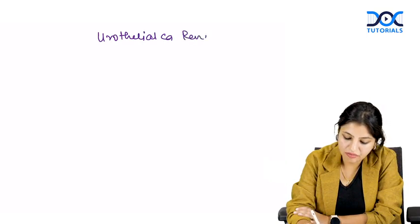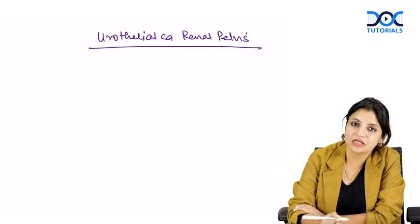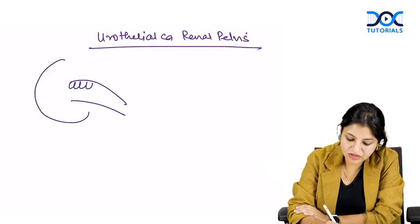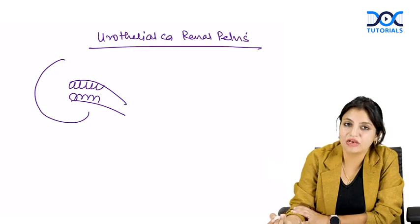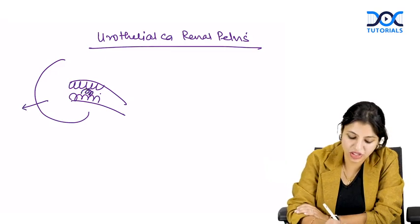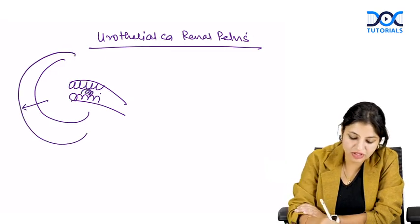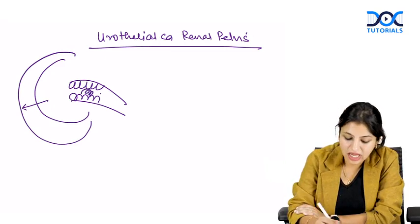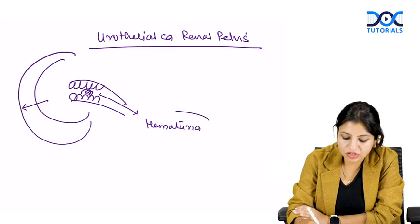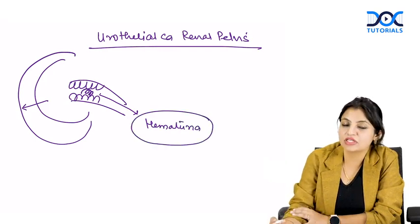Urothelial cancer of the renal pelvis arises in the pelvis, and as soon as it arises it can obstruct the pelvis. The patient can therefore present with hydronephrosis. Because these tumors are obstructing the pelvis, they can also present early with hematuria.